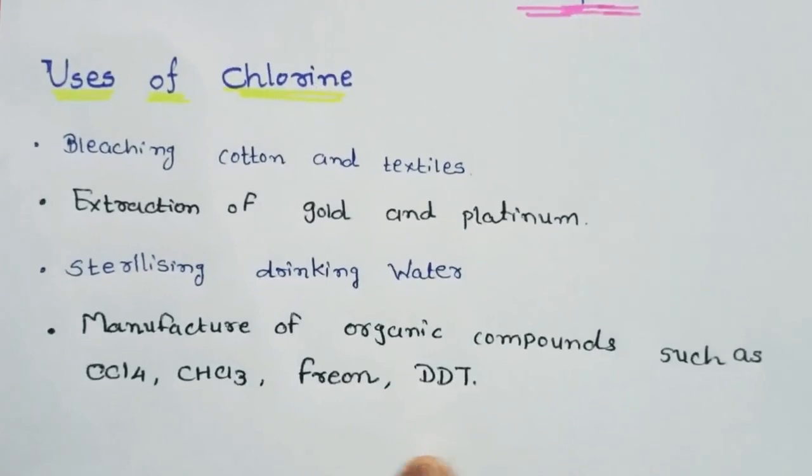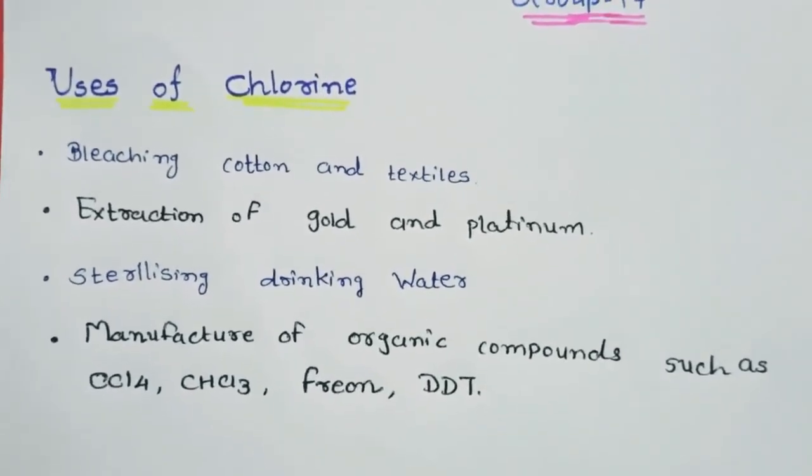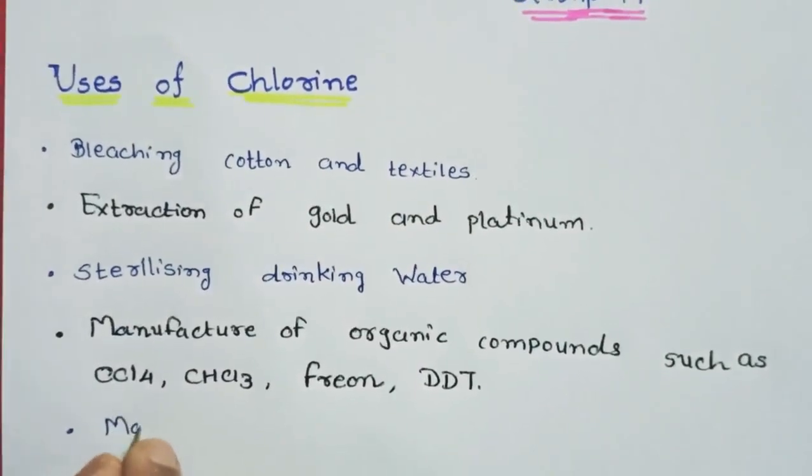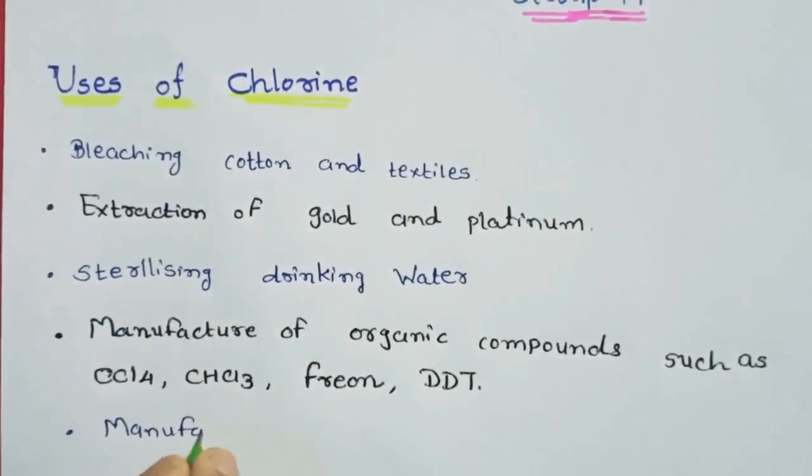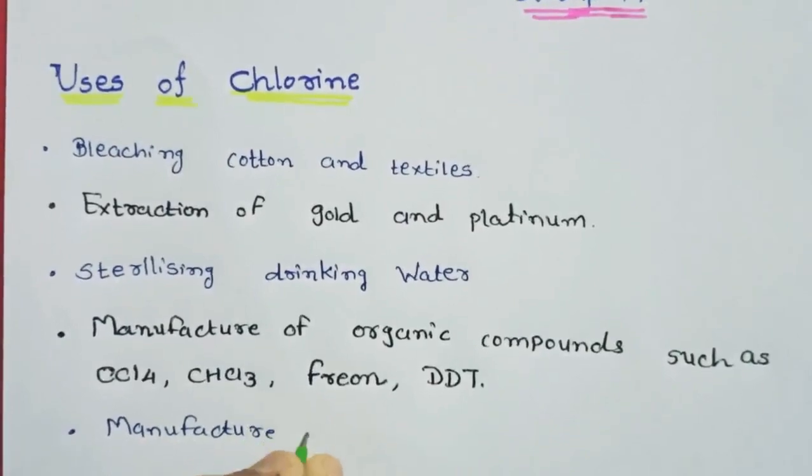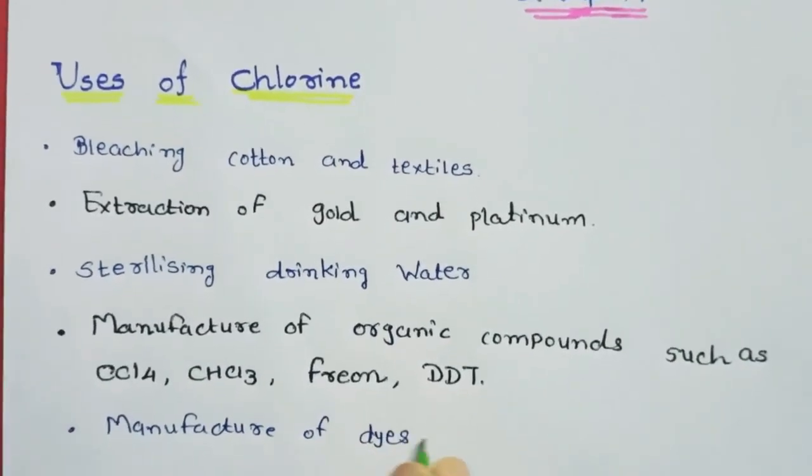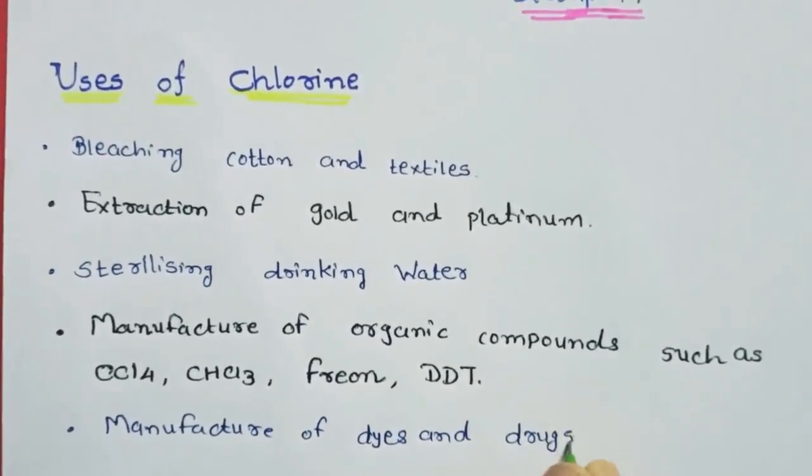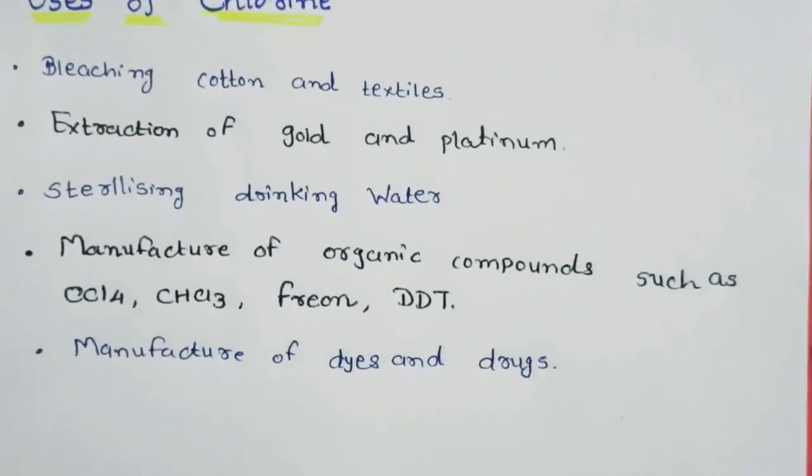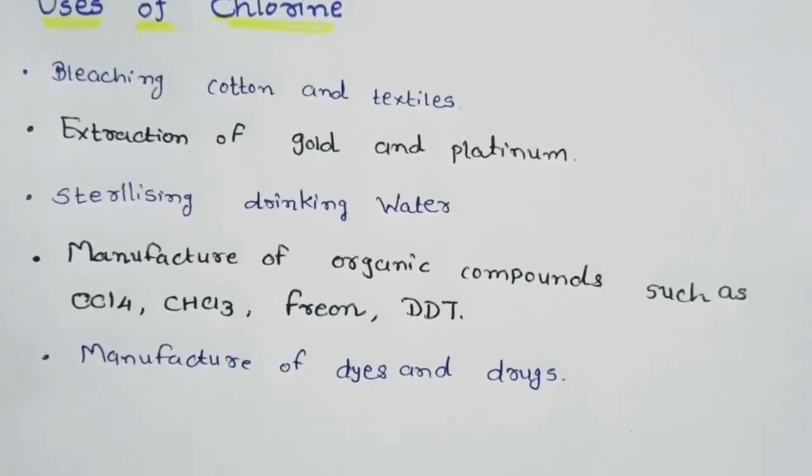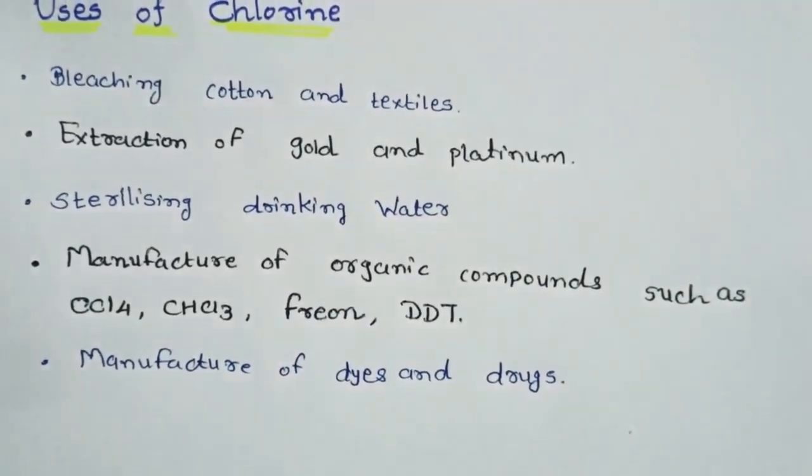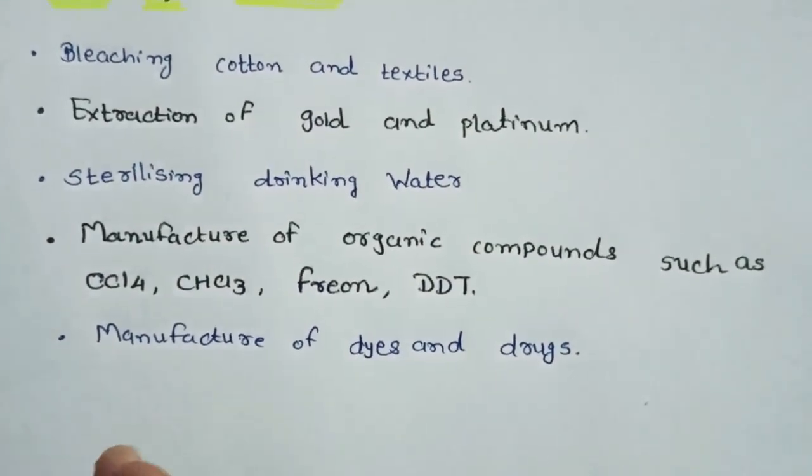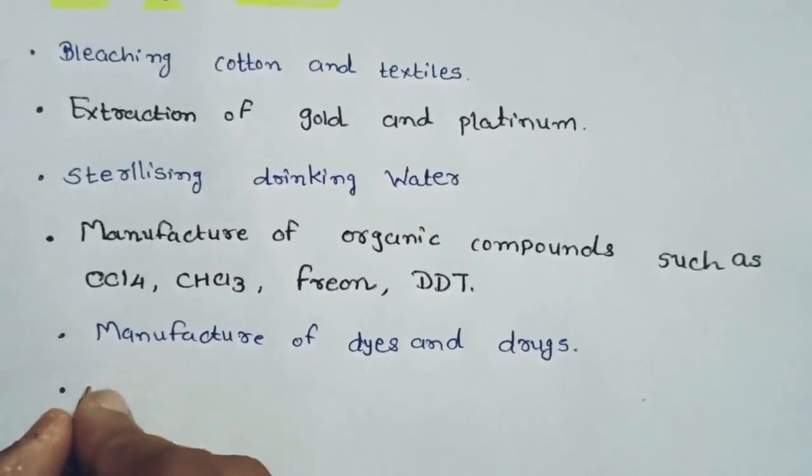The next use of chlorine is it is used in the manufacture of dyes and drugs. Mainly in drug preparation it is used. If you look at the names of drugs, you will find that they are all chlorine-containing compounds.